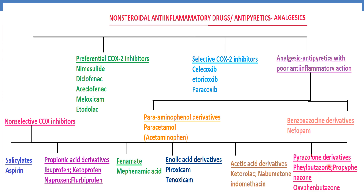Finally, pyrazorone derivatives include phenylbutazone, propyphenazone, and oxyfenbutazone. These are the examples of pyrazorone derivatives. Now coming to preferential COX-2 inhibitors, the drugs are nimesulide, diclofenac, aceclofenac, meloxicam, and etodolac.